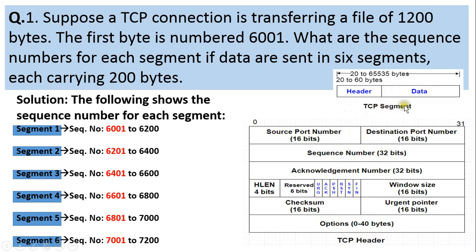The maximum size of a TCP segment is 65535 bytes, but practically it is much lesser than this because the entire TCP segment is encapsulated in the IP datagram at the network layer. In the TCP header there is a sequence number field of 32 bits. The minimum sequence number possible is 0 and the maximum value of the sequence number is 2 raised to 31 minus 1.